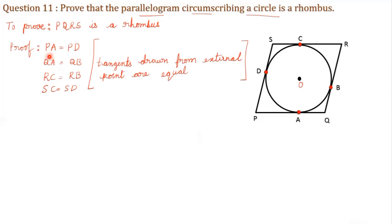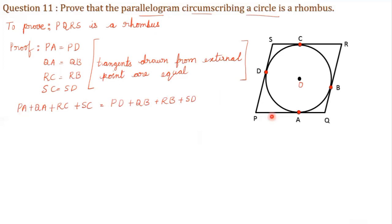Now add all these four equations. We get PA plus QA plus RC plus SC is equal to PD plus QB plus RB plus SD. Now observe the figure: PA plus QA is equal to PQ, and RC plus SC is equal to SR.